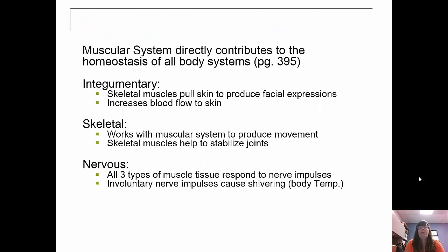How does the muscular system contribute to homeostasis? It contributes with the integumentary system because the muscles pull the skin to produce facial expressions and also increase or decrease blood flow to the skin. It works with the skeletal system to produce movements and stabilize body positions and joints. The nervous system has all three types of muscle tissue, which respond to nerve impulses, and involuntary nerve impulses cause shivering when you go outside and get cold.